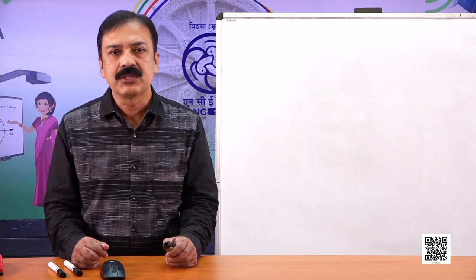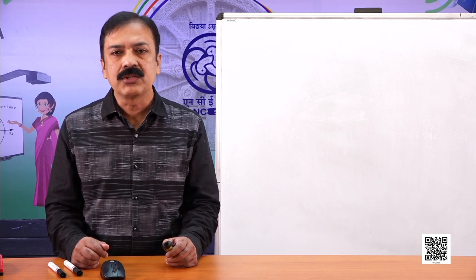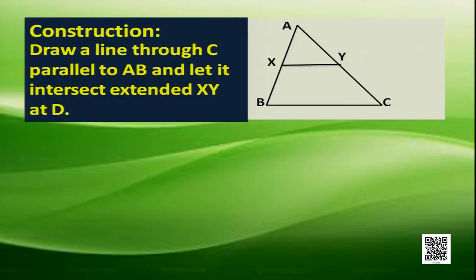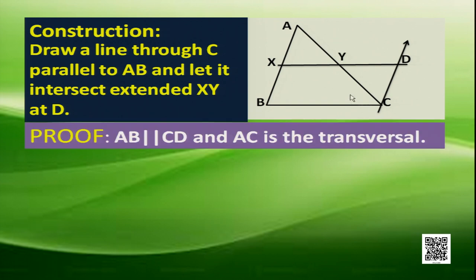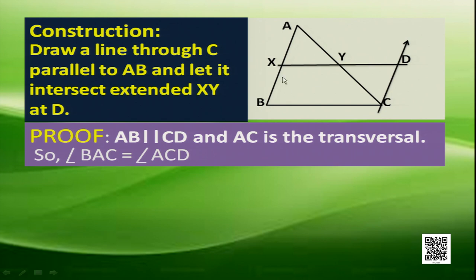To prove this, we need some construction. Draw a line through C which is parallel to AB, and let that meet the extended XY at D. Now AB is parallel to CD, and AC is the transversal. In such a case, angles BAC and ACD are alternate interior angles, so they are equal.